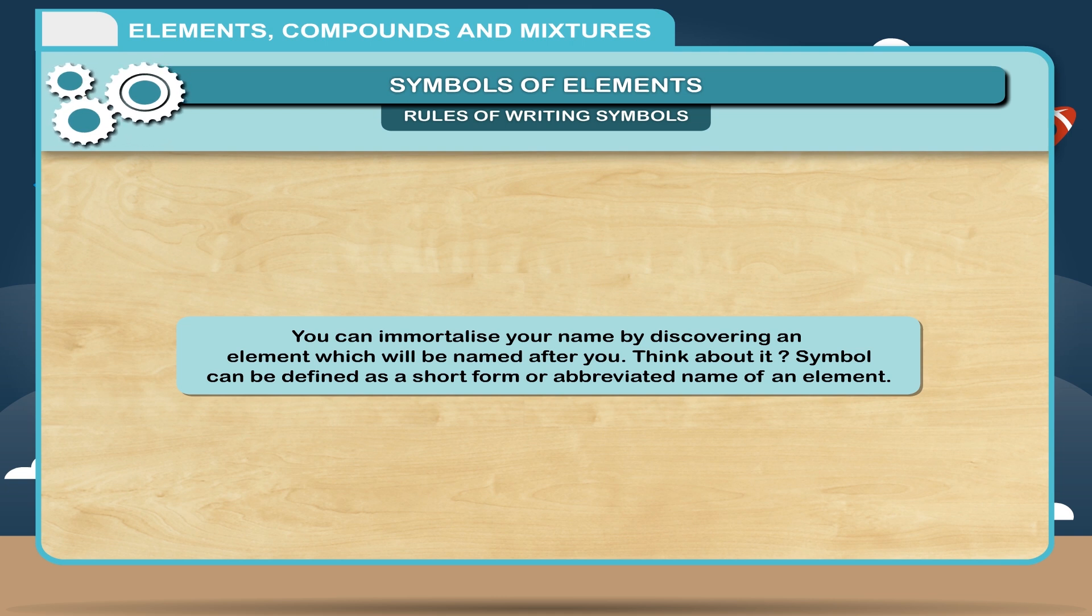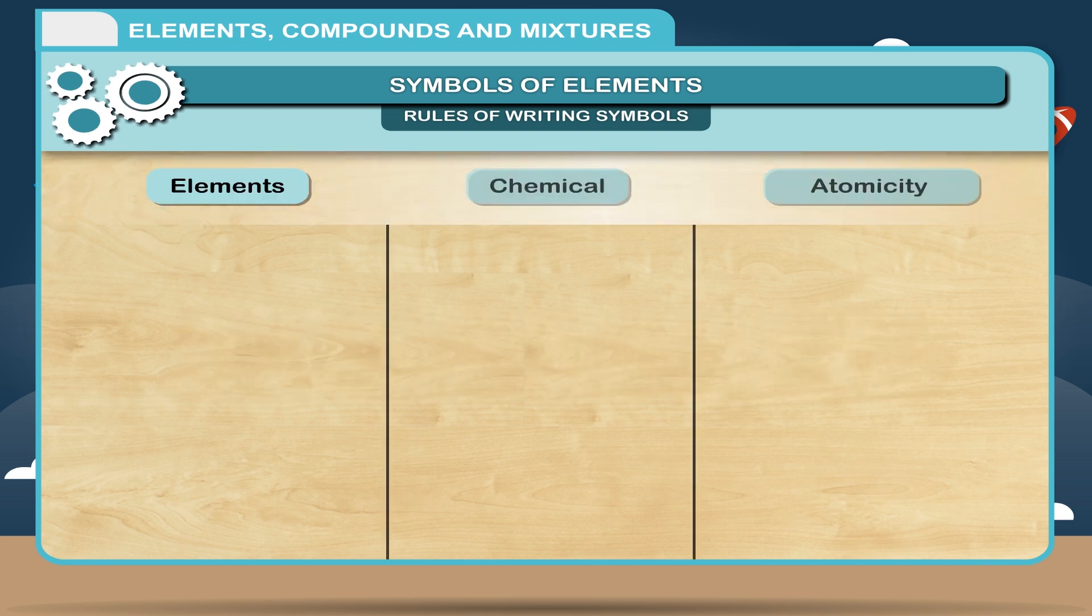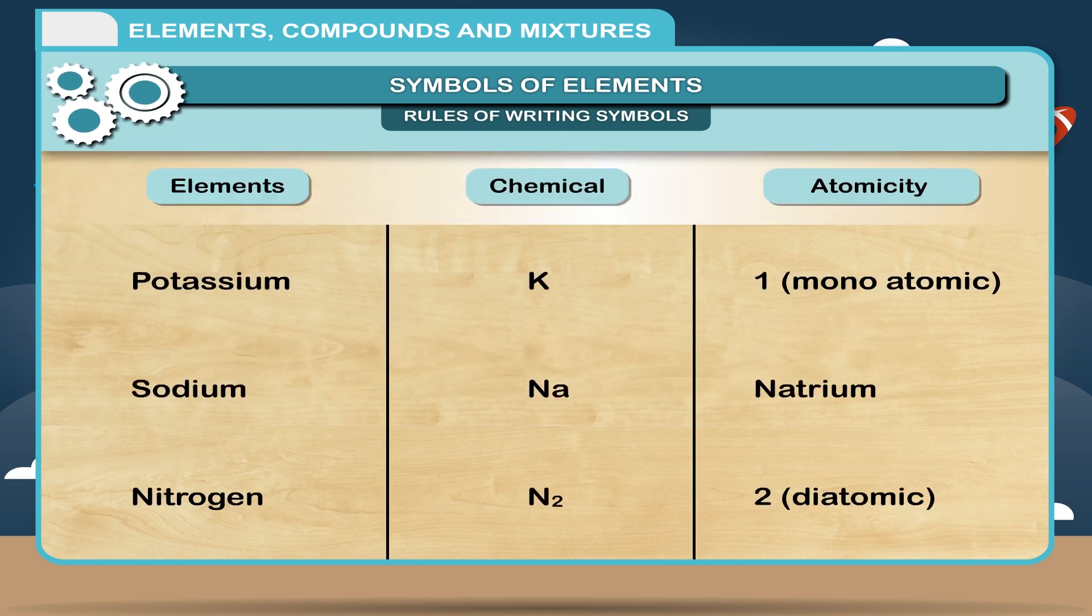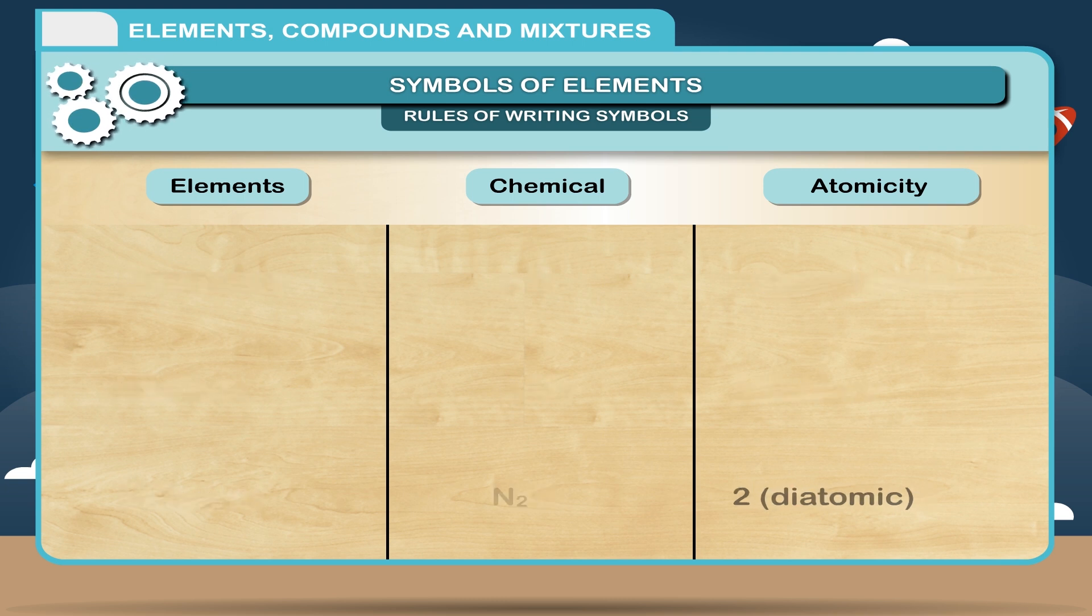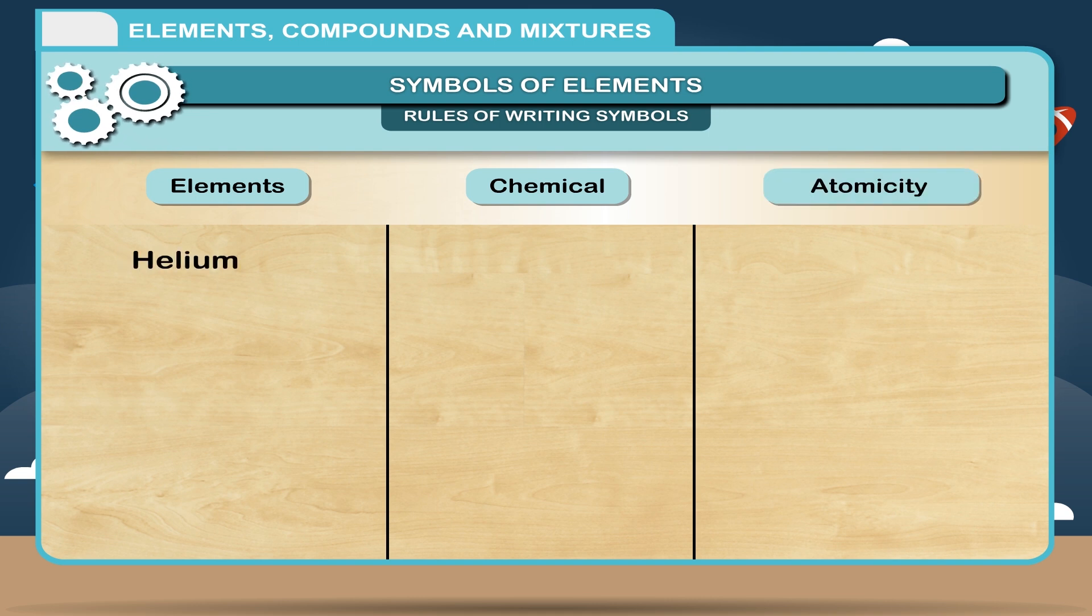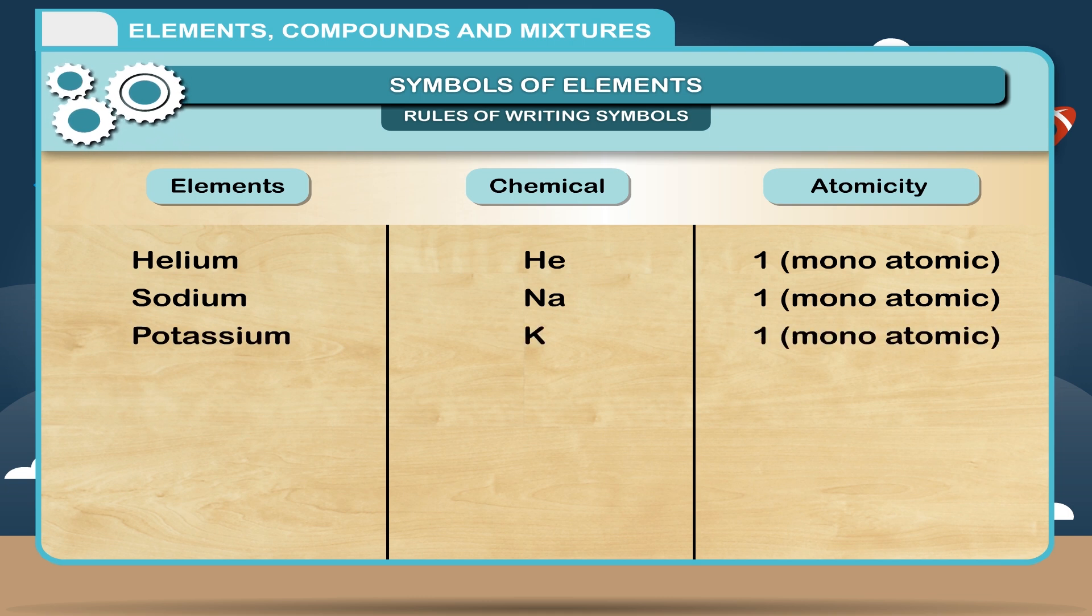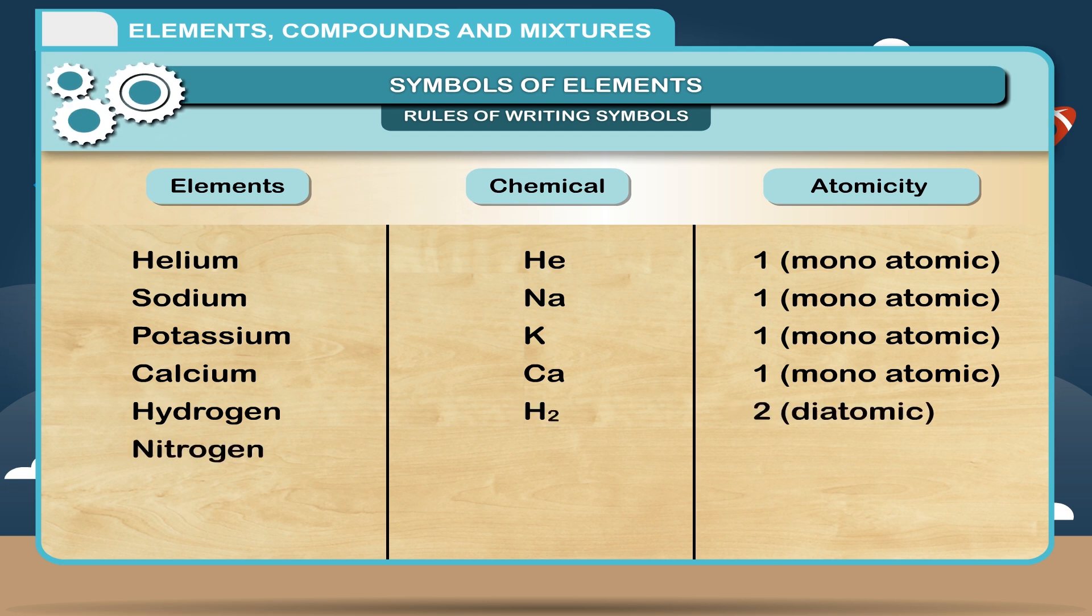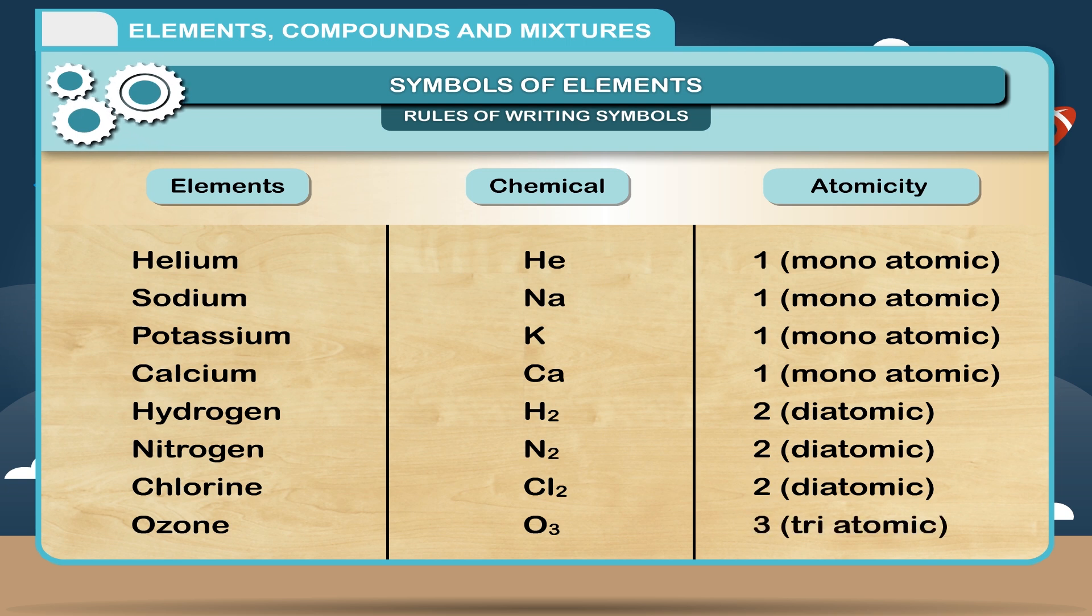Symbol can be defined as a short form or abbreviated name of an element. Chemical symbol represents the number of atoms in one molecule of the element. This is called atomicity. Table showing few elements with their atomicity and formulae: Helium He, 1 monoatomic; Sodium Na, 1 monoatomic; Potassium K, 1 monoatomic; Calcium Ca, 1 monoatomic; Hydrogen H2, 2 diatomic; Nitrogen N2, 2 diatomic; Chlorine Cl2, 2 diatomic; Ozone O3, 3 triatomic.